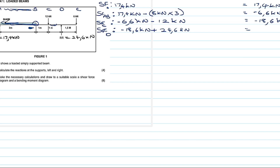Now shear force at point E: we carry forward the 6 kilonewtons from point D, then subtract the 6 kilonewton force acting downwards at E. Shear force at E = 6 minus 6 = 0 kilonewtons. That is the final answer, which confirms our calculations are correct.